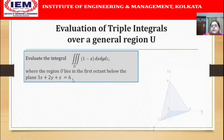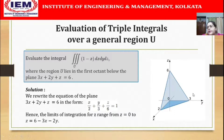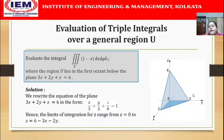We first need to draw the figure. The plane 3x + 2y + z = 6 can be rewritten as x/2 + y/3 + z/6 = 1, which tells us this plane cuts the x-axis at (2,0,0), the y-axis at (0,3,0), and the z-axis at (0,0,6). We now need to find the limits of x, y, z so that the region U will be covered.